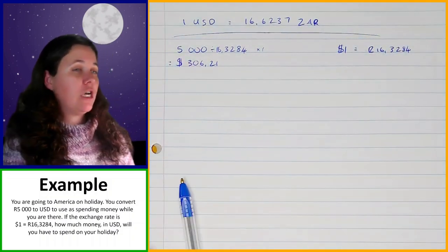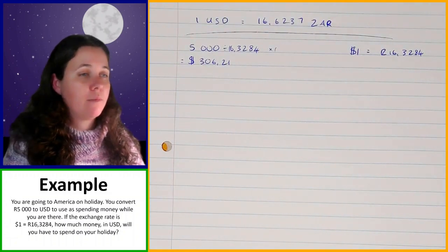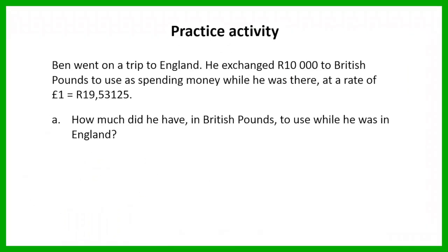So now I'm going to give you an activity that you're going to work on for yourself. So in this example, Ben went on a trip to England. He exchanged 10,000 rand to British pounds to use as spending money while he was there at a rate of one pound equals 19.53125 rand. The first thing you're going to do is you need to calculate how much did he have in British pounds to use while he was in England. So that's the first thing you're going to work on. I'm going to give you one minute to work that out.